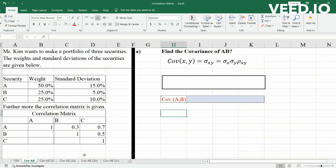So the problem at hand is this: Mr. Kim wants to make a portfolio of three securities. The weights and standard deviations of the securities are given, as well as the correlation matrix.